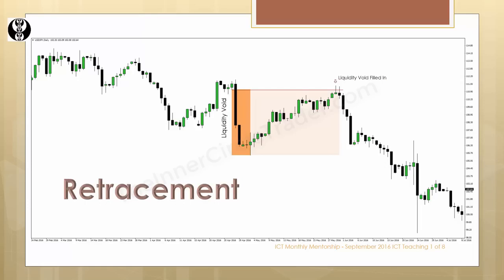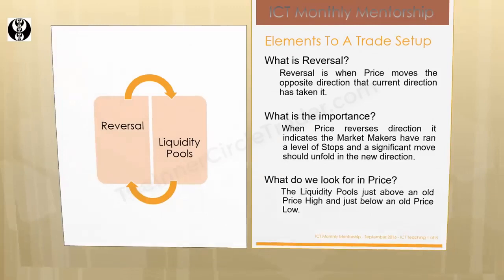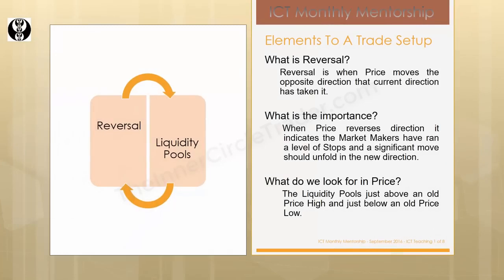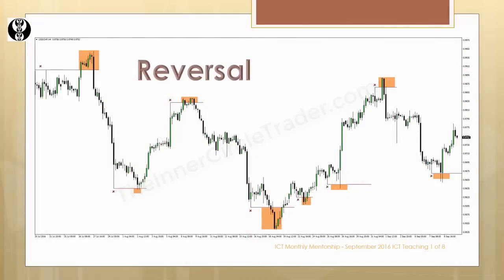We've covered three conditions. The next one is the reversal. The reversal is when price moves in the opposite direction the current direction has taken. When looking for reversals, we're directly coupling that with the ICT tool of liquidity pools. When price reverses direction, the market makers have raided a level of stops and a significant move should unfold in the new direction. What do we look for in price? The liquidity pools just above an old high and just below an old low. Every X on the chart indicates where stops would be, and the market goes just above those levels and rejects and goes the other way, or goes just below those levels and rejects and goes the other way.